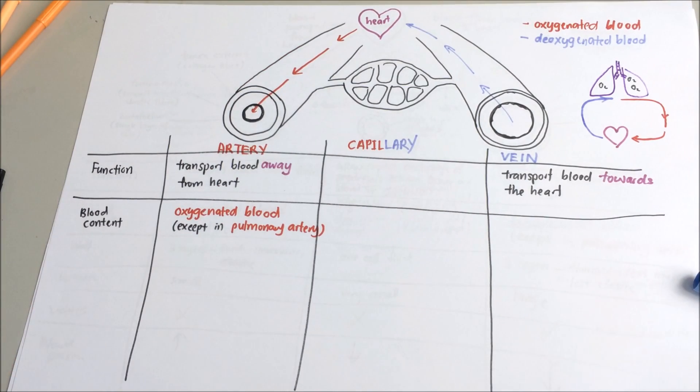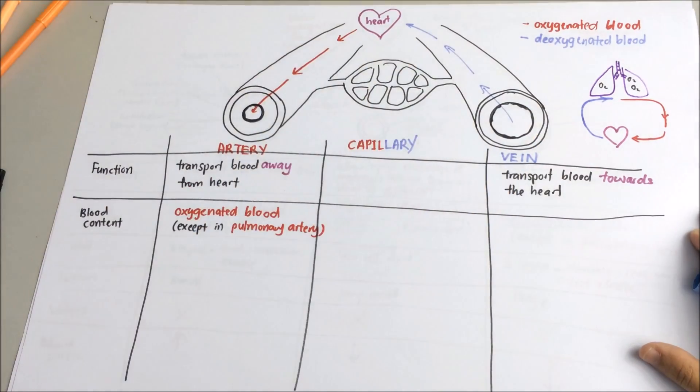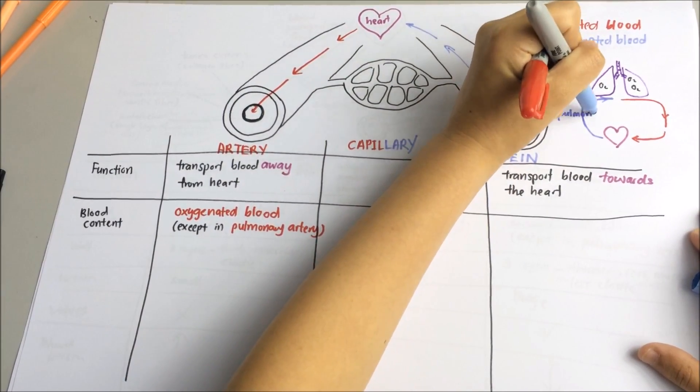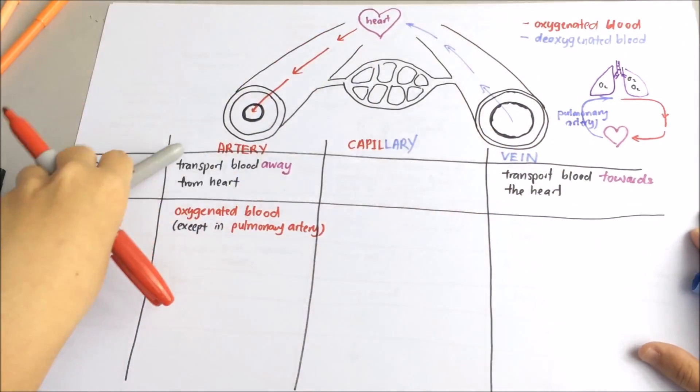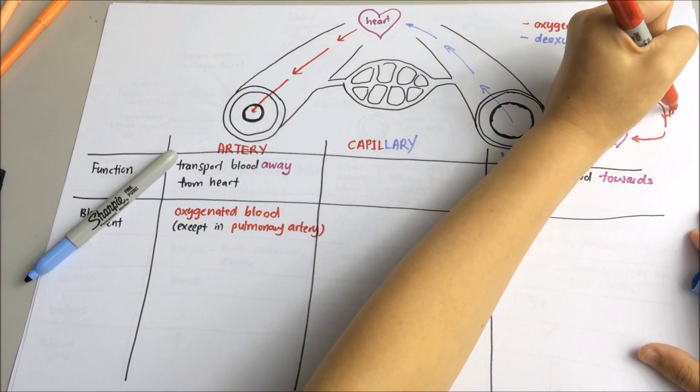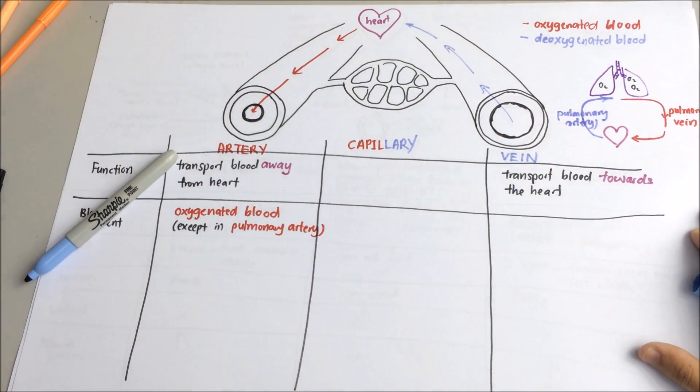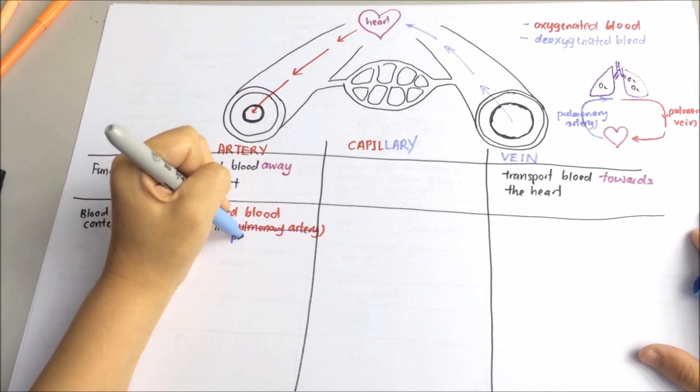As for the vein, vein will carry deoxygenated blood. Here pulmonary vein is the only vein that carries oxygenated blood from the lungs to the heart after the oxygenation.